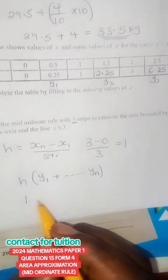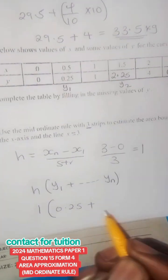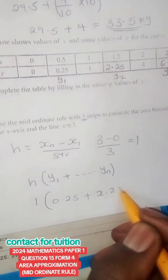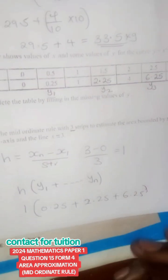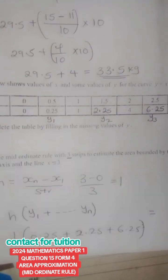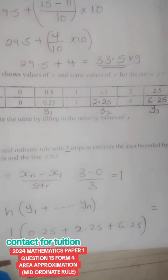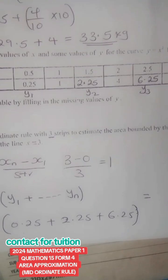The height is 1. So 1 into 0.25 plus 2.25 plus 6.25. If you work that out, you'll get the area bounded by this curve. Let me just add that quickly.